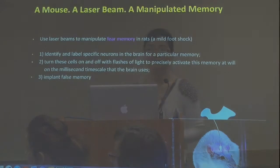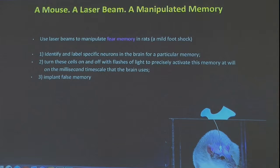In this experiment, they used a laser beam to manipulate the fear memory of rats that had light fibers implanted in their brains. The rats were then given a mild foot shock to induce a fear memory. They achieved three important things: first, they identified and labeled specific neurons in the brain responsible for a particular memory. Second, they were able to turn those neurons on and off with a flash of light to precisely activate those memories at will on the millisecond timescale at which the brain works.